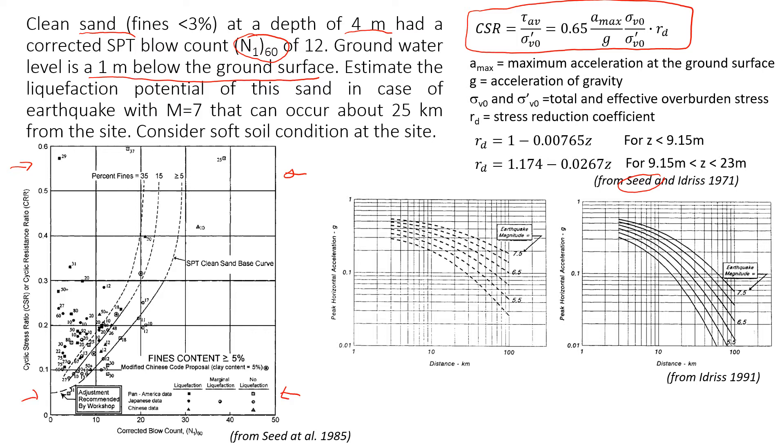In case if there is earthquake with magnitude of seven and the epicenter will be about 25 kilometers away from the investigation site. And also we should consider soft conditions on the site, and I will explain why we need this one.